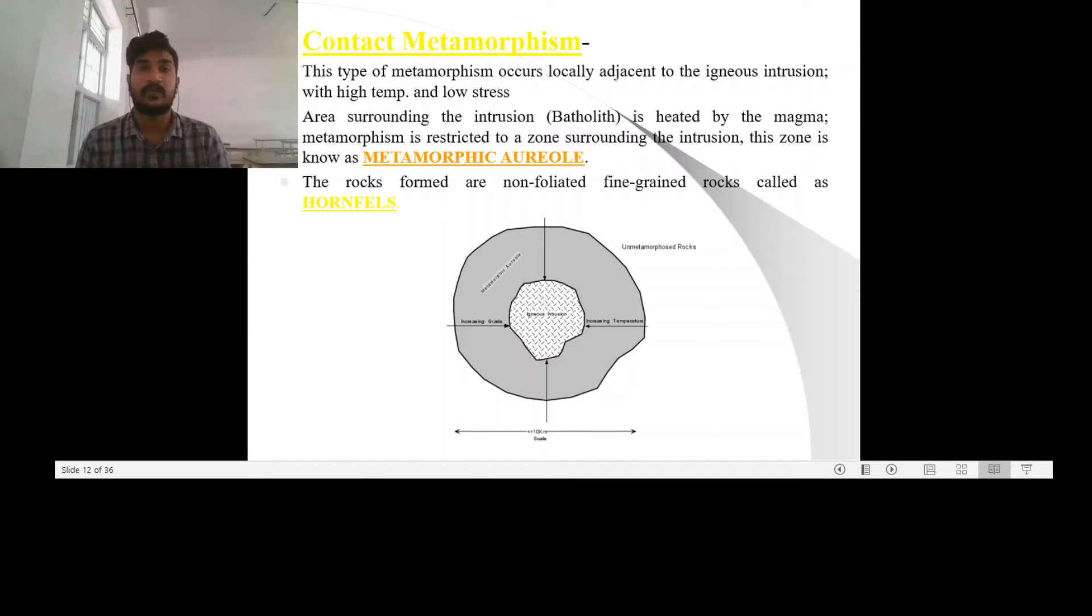The contact metamorphism is dependent on the temperature contrast between the surrounding rocks and the intruding magma. Since the temperature contrast is high in deeper rocks where pressure is low, the contact metamorphism is also known as a high temperature, low pressure metamorphism.